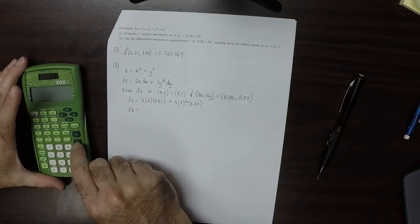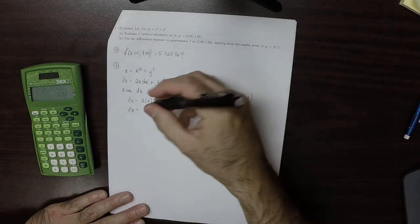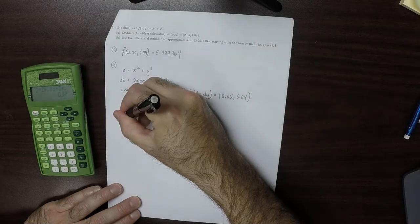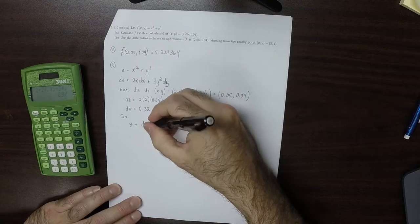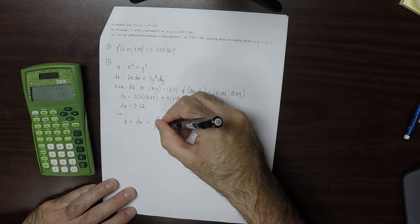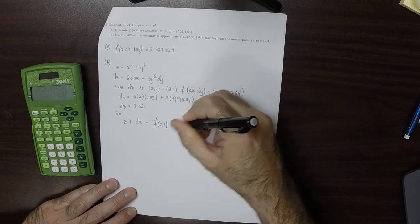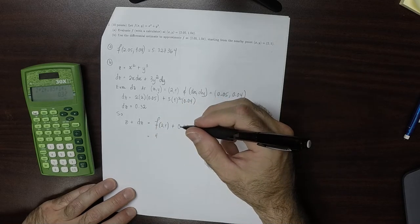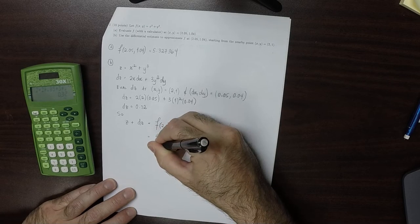Evaluating that, 2 times 2 times 0.05 plus 3 times 0.04, that's 0.32. So our answer will be z plus dz, which is f evaluated at 2, 1, plus this value. So f evaluated at 2, 1, well that's 4 plus 1, plus 0.32. So that's 5.32.